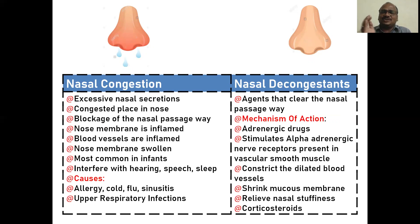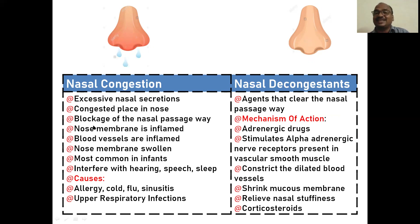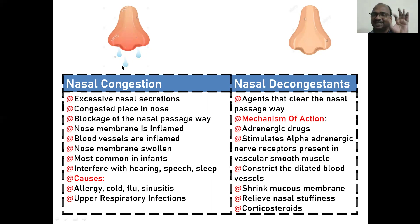Congested means small place. In nasal congestion, there is a very small place in your nose, which leads to drainage — all the secretions come outside because there is no space inside. The place is congested, that's why nasal secretions are coming outside. Why is the nasal pathway blocked? The nasal membrane is inflamed — inflammation means swelling — so the nose membrane blood vessels become inflamed and swell, leaving no space, and all secretions come outside.